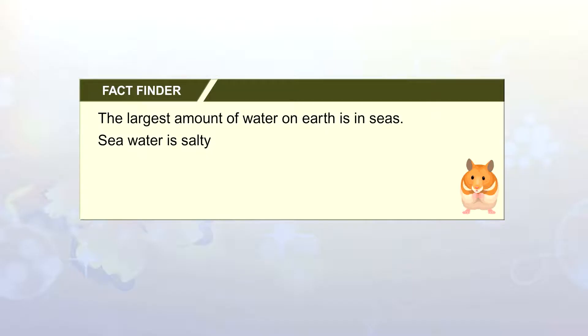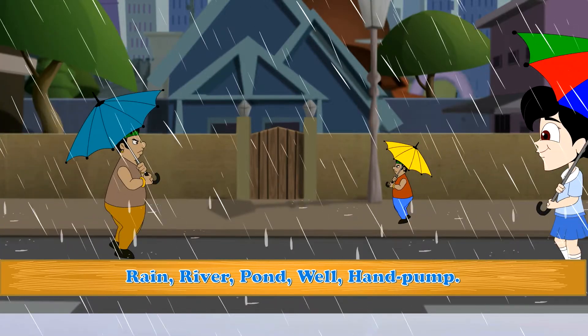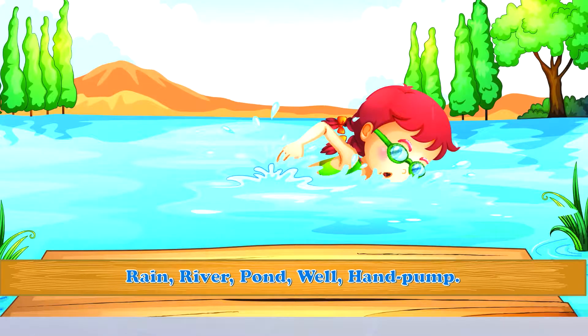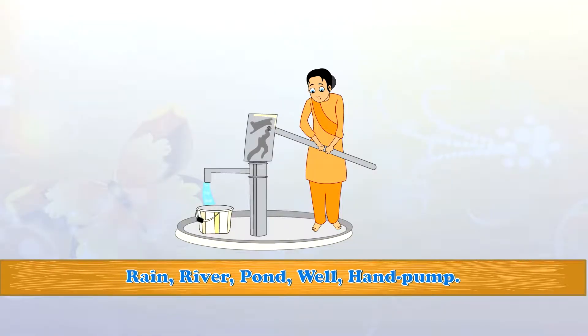Fact Finder. The largest amount of water on earth is in seas. Sea water is salty. Other sources include rain, river, pond, well and pump.